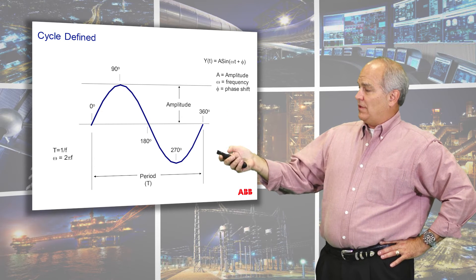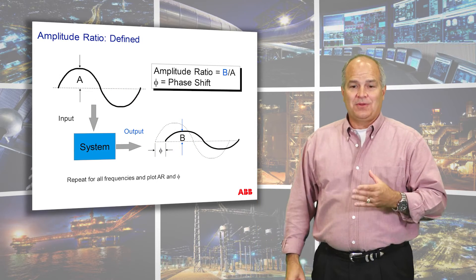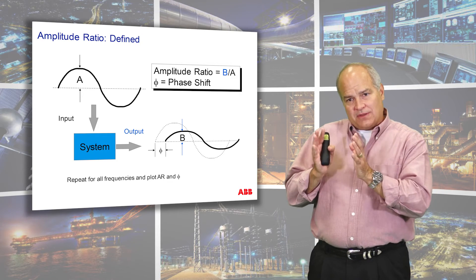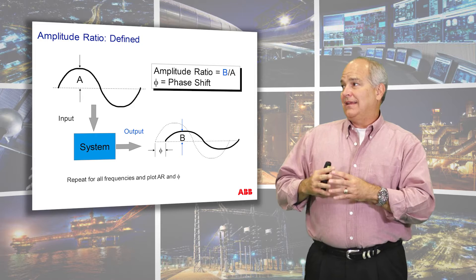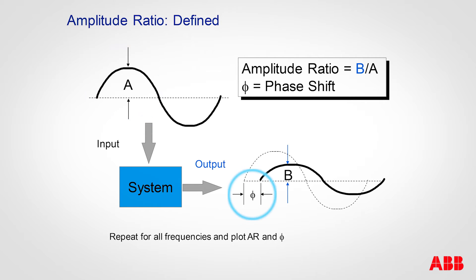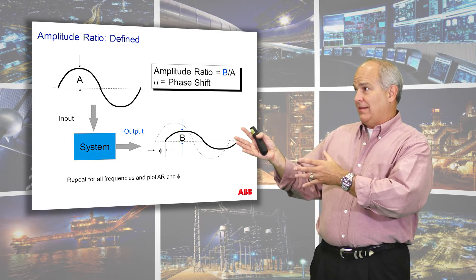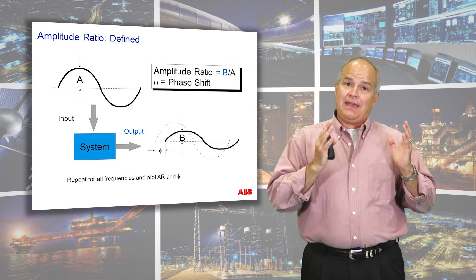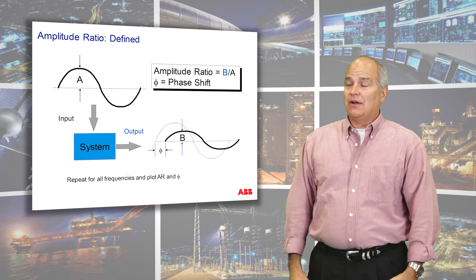When we look at a sine wave with an amplitude and it goes into a process, it comes out attenuated — well, we hope so. In tuning, we could actually make it come out worse. So in this first part of the video we're going to talk about what in the technical term is a Bode plot, but we're going to refer to it as an amplitude ratio. We have a system where the amplitude comes in with, let's say, A, and it comes out phase shifted with an amplitude B. The ratio of the amplitudes on the input and output of our process is what we refer to as the amplitude ratio.